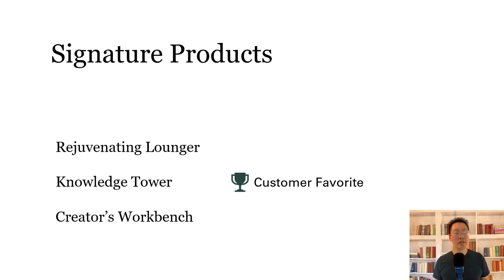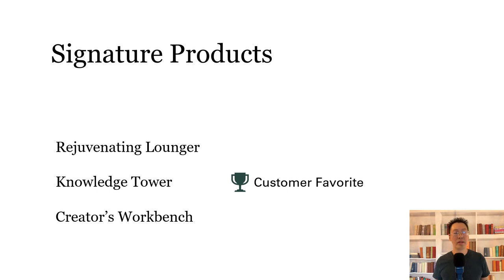To fix this, group those objects together and specify alt text that explains what's going on. After doing that, the screen reader reads: 'Rejuvenating lounger. Knowledge tower is customer favorite. Creator's workbench. Group.' That makes it much clearer. Use this technique to ensure people understand the content on your slides.